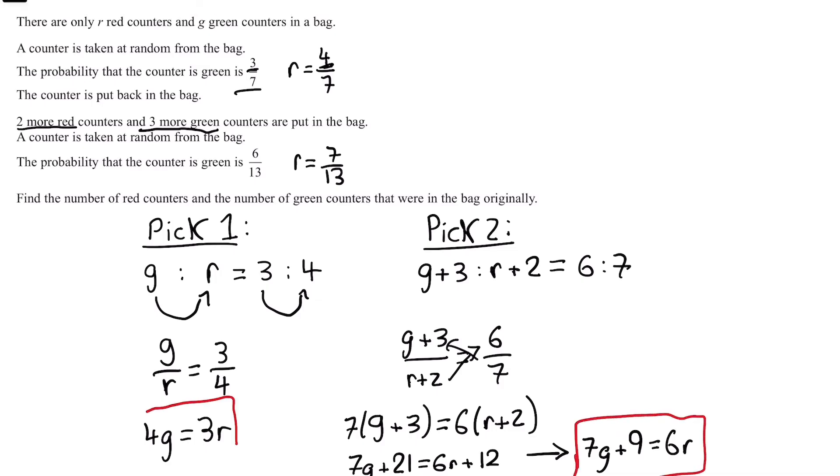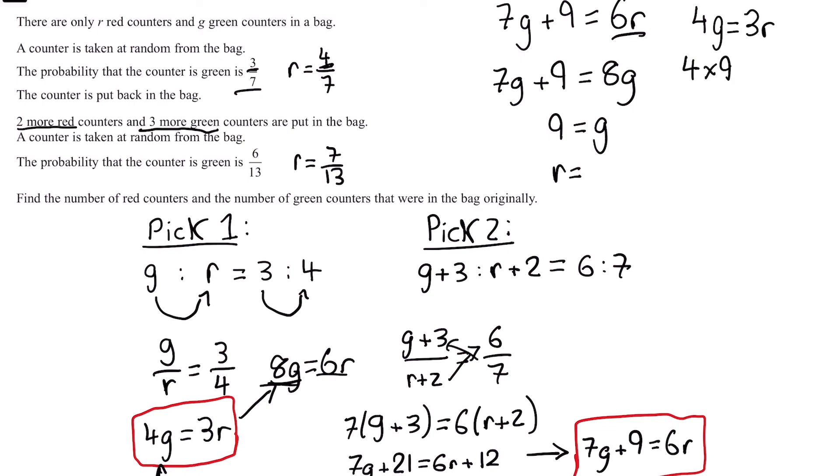If you notice, we have a pair of simultaneous equations. Now the hard part is gone. Here we're just solving simultaneous equations. We have 7g + 9 equals 6r. Notice here, if we multiply both sides of the first equation by 2, we have 8g equals 6r. We have 6r here too. So we can substitute, we have 7g + 9 equals 8g. Take away 7g from both sides, we have 9 equals g. Now we can find r by subbing g into here. 4g equals 3r. 4 times 9, which is 36, equals 3r. Divide both sides by 3, so r equals 12. That's our final answer.